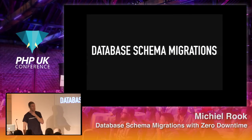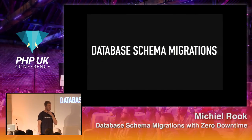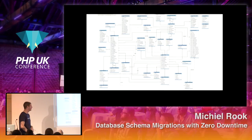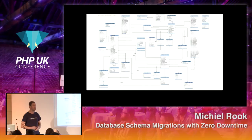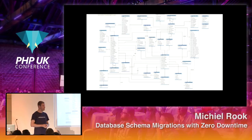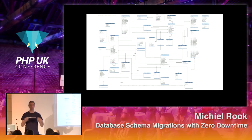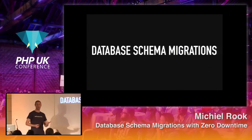We're going to talk about database schema migrations specifically. A database schema could look something like that — a lot of tables, primary keys, foreign keys, relations between tables, table structure, all those things. At some point, you have a database schema that is not sufficient for the direction your application is going, and then we end up with a migration, a change to our database.